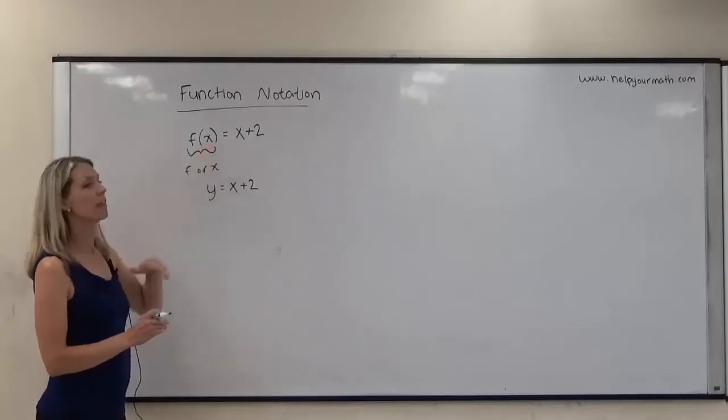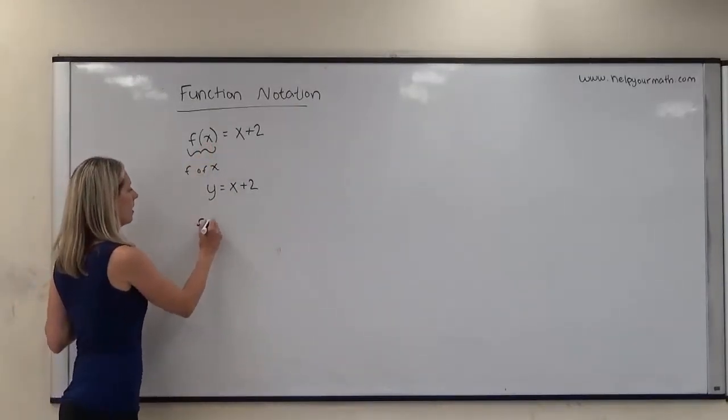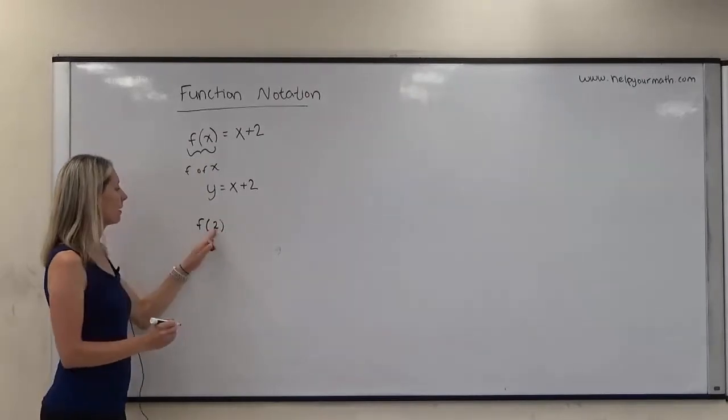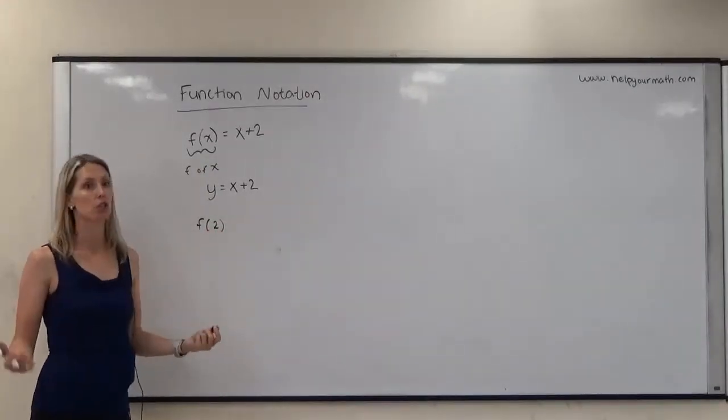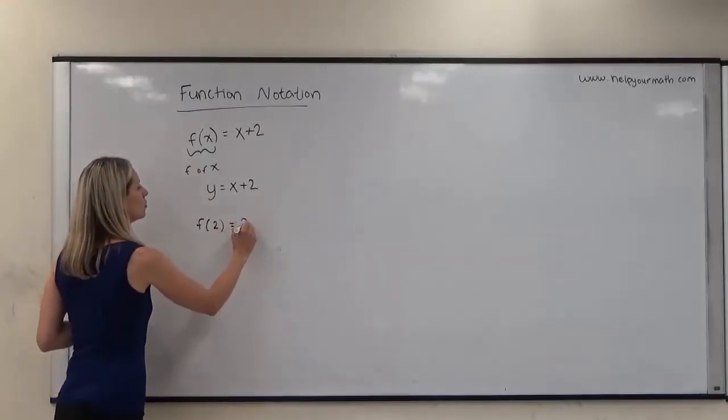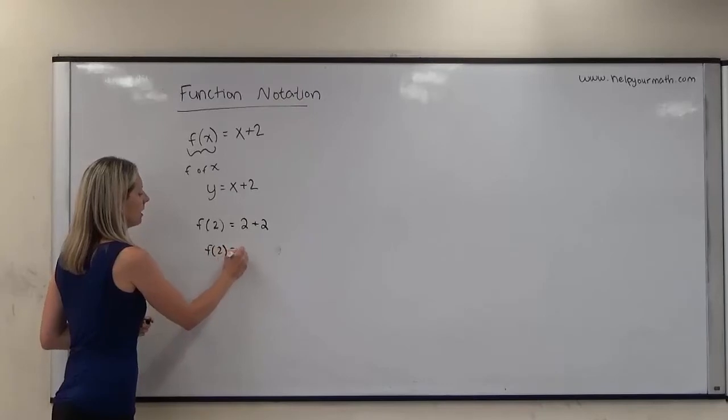If we're given a value here, then we would take that value and plug it in for x. So if I said f of 2, that means anywhere in the function that you see x, we are now replacing it with 2. So that would become 2 plus 2, so we would say that f of 2 is 4.